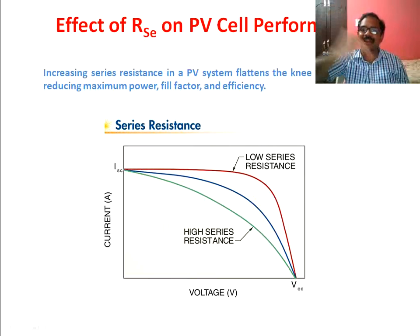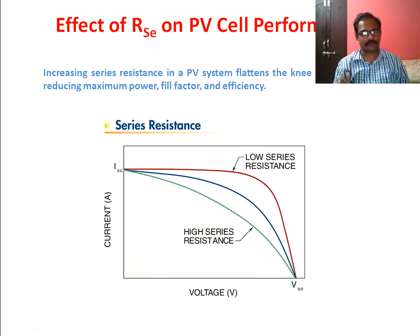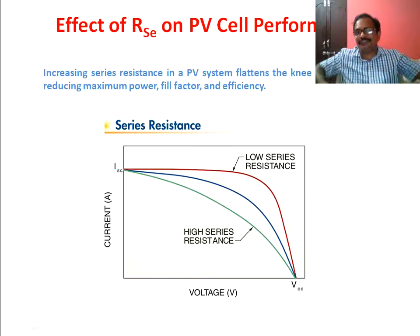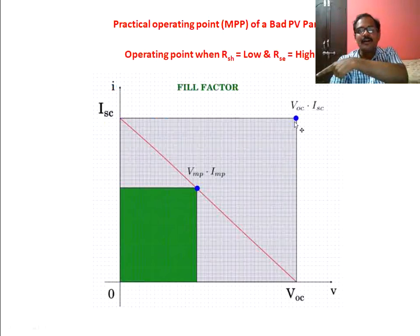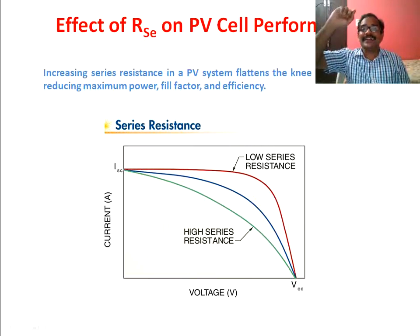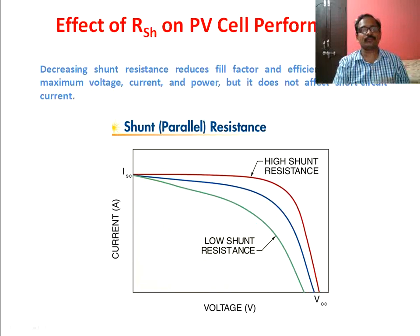If I decrease the value of series resistance, the performance of the solar cell will improve and the IV curve will move upwards — the blue curve will become the red curve. Increasing series resistance in a PV system flattens the knee in the IV curve. If it becomes worst, it will become a diagonal line. Increasing series resistance reduces maximum power, fill factor, and efficiency.